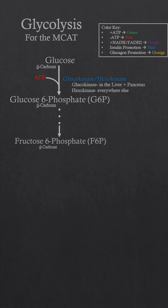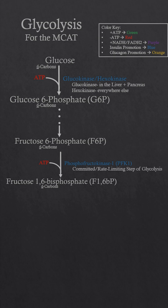For the MCAT, we skip over a few steps to the molecule fructose-6-phosphate, still a six-carbon molecule. We then use another ATP to produce F1,6BP via the enzyme PFK1. The PFK1 reaction is the committed or rate-limiting step of glycolysis. It is also promoted by PFK2, which responds to insulin to form more F2,6BP, which directly activates PFK1 and stimulates glycolysis.